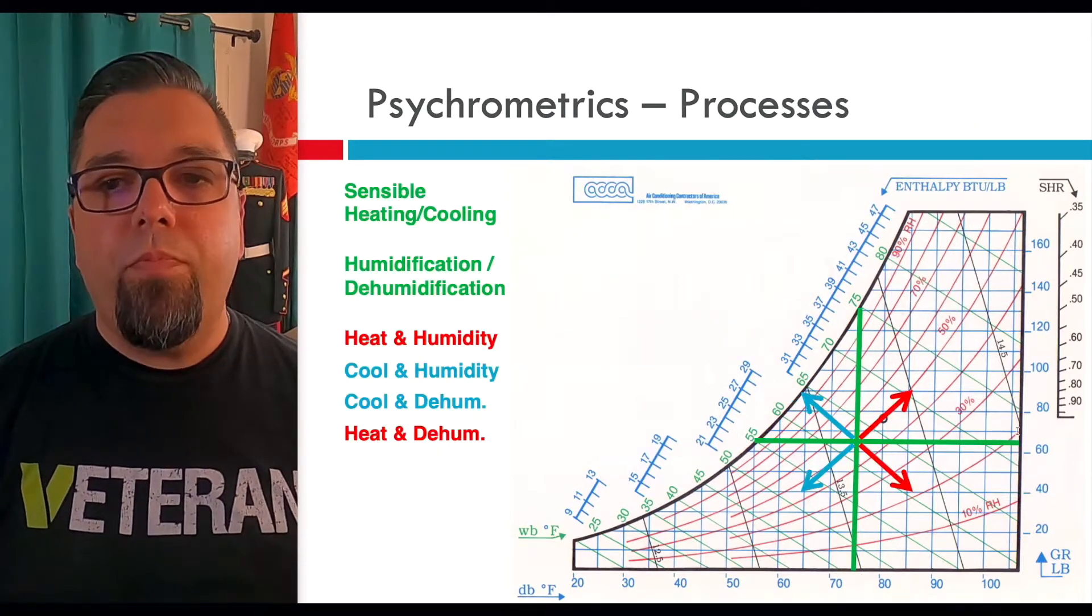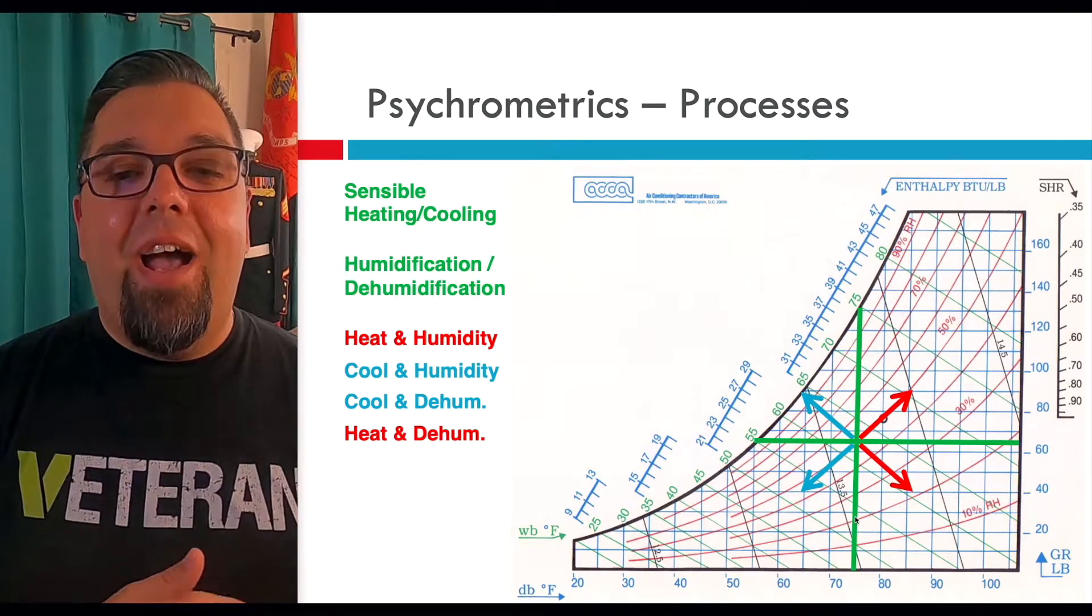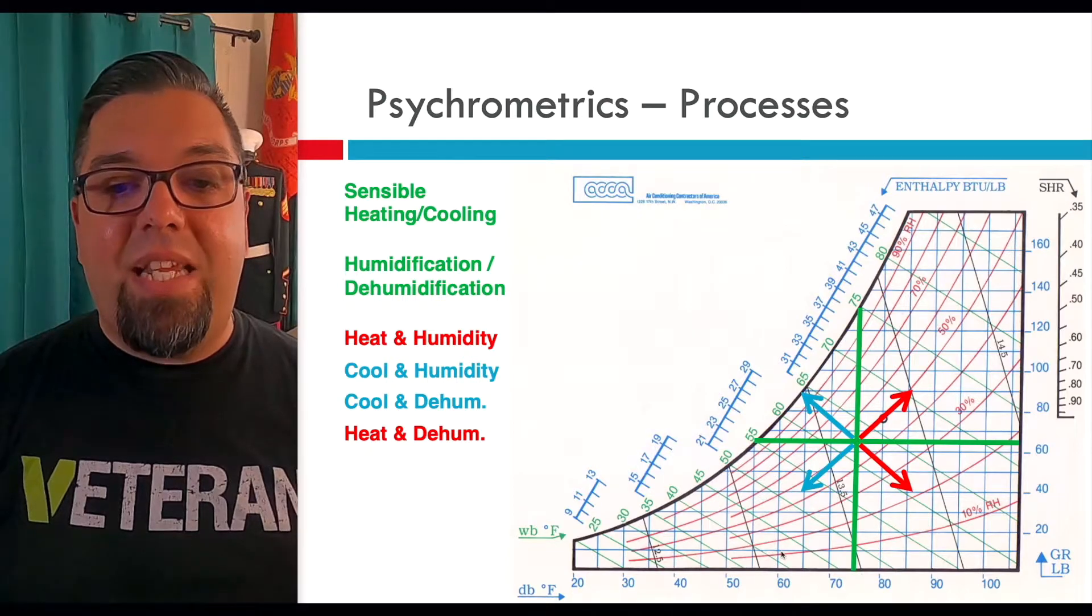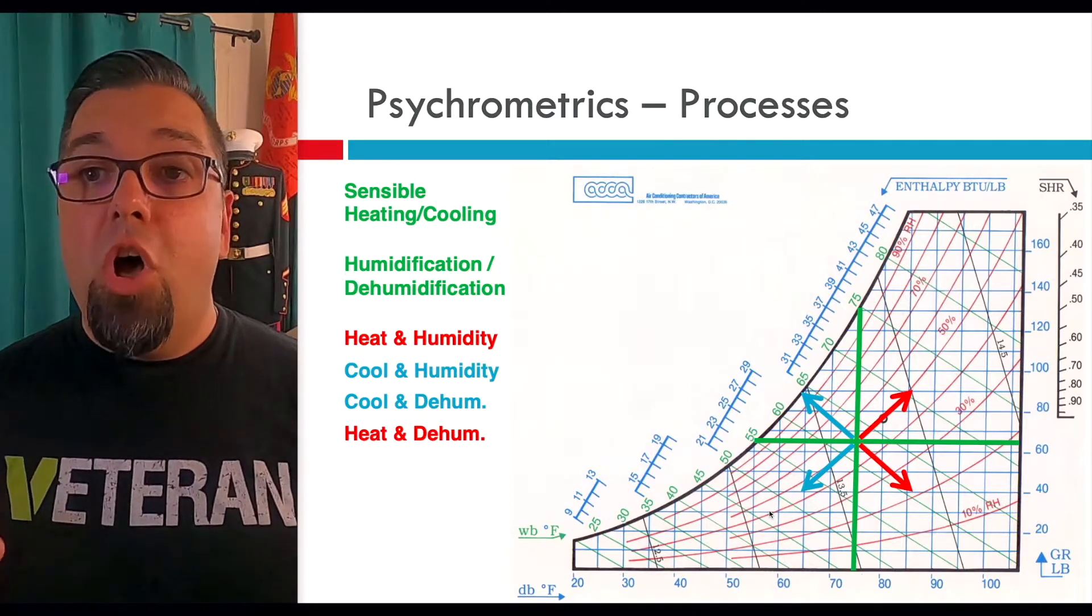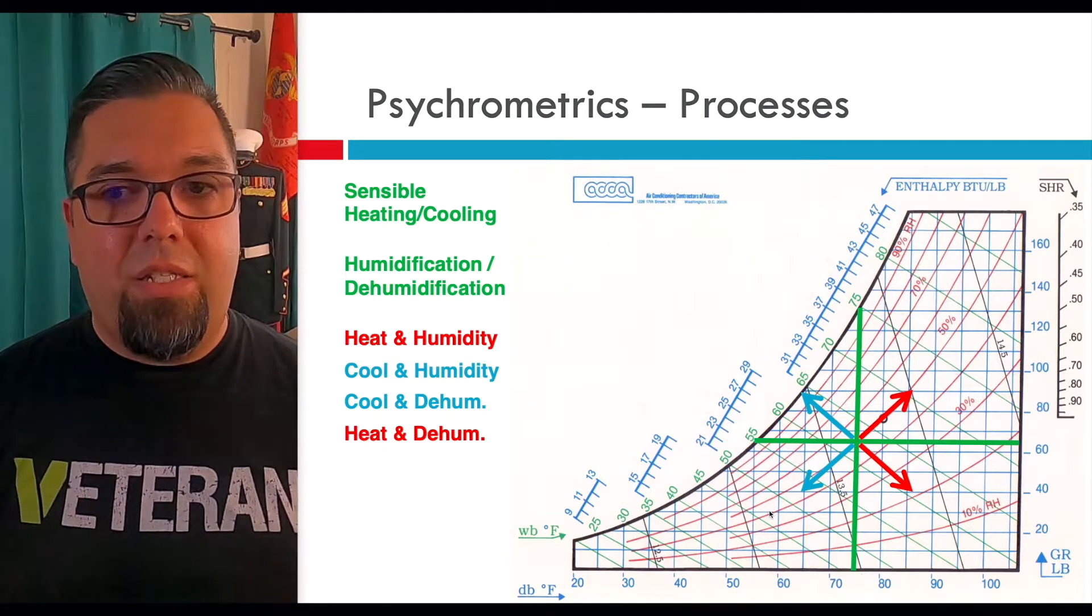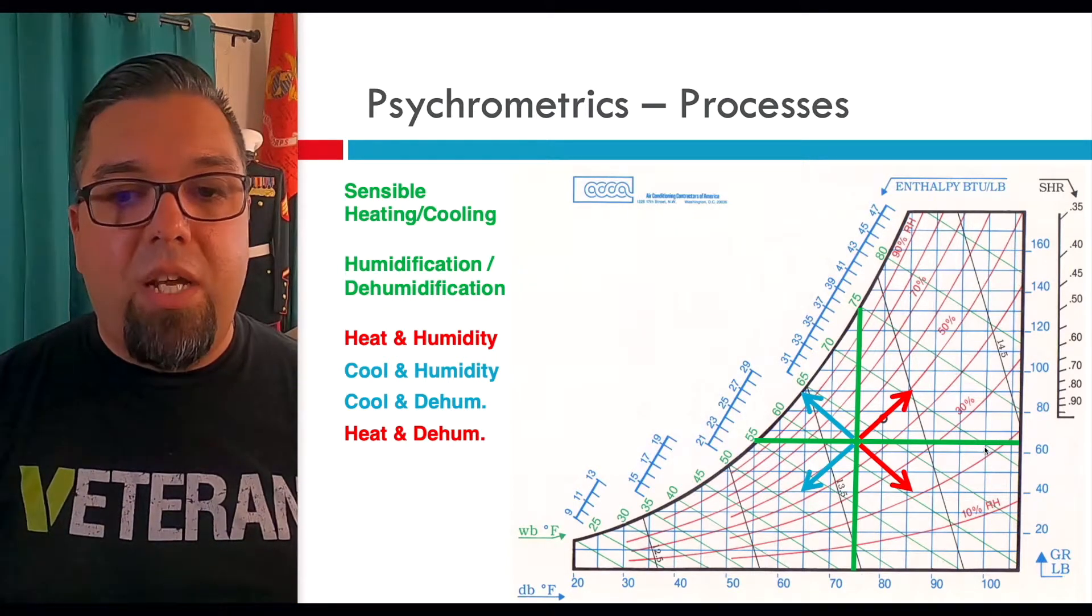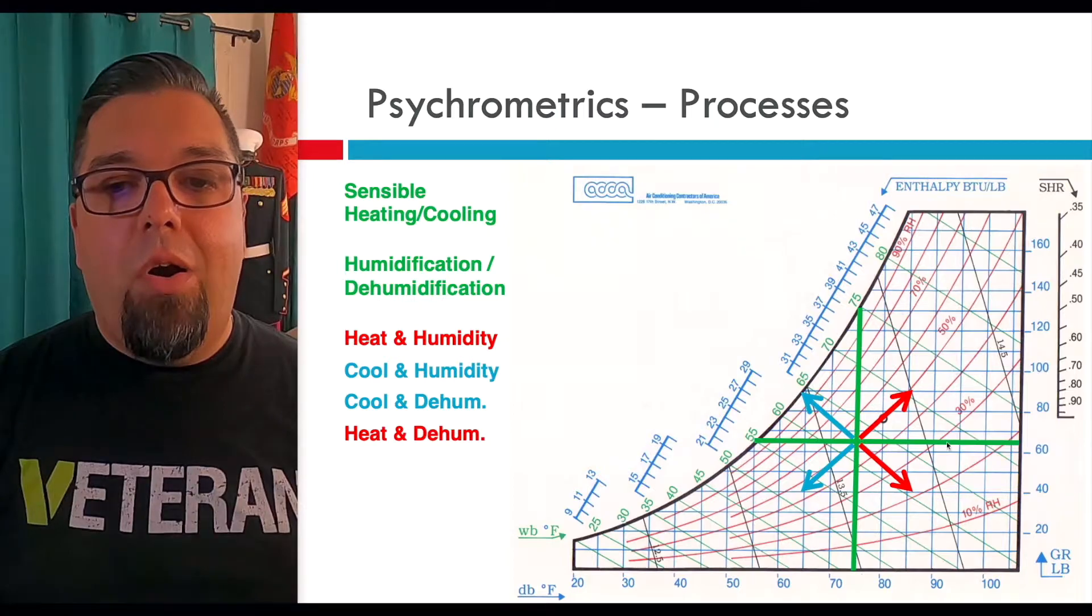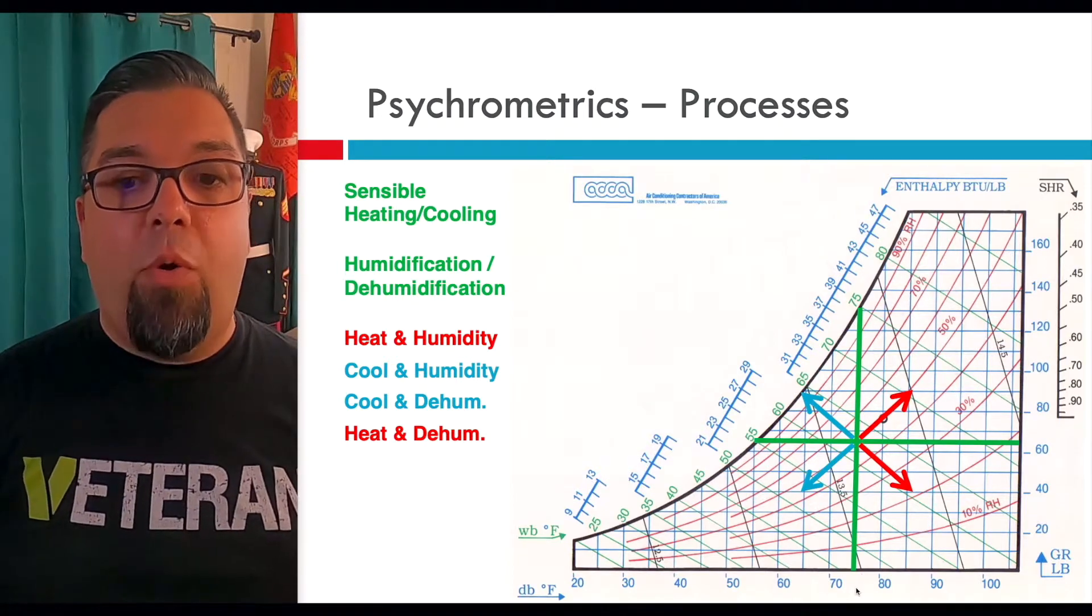That's how to read the chart. Now I'm going to talk about what the chart can do for you. If we have a horizontal line we're going to be changing sensible temperature. We could start out at let's say 60 degree dry bulb in the return of a furnace and if I was to not add any humidity or not remove any humidity, a horizontal line will show sensible temperature being added to the space if we're going to move to the right. If I stick my probe in the supply of the furnace and it's a hundred degrees coming out, you can see that would move horizontally. We're not adding any humidity, we're just changing sensible temperature.